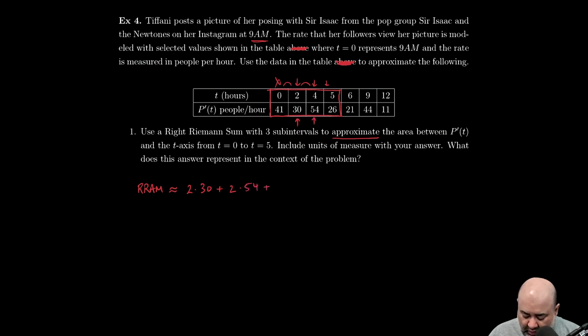Plus, now notice that these are not all equal widths. This width was two, this width was two, and this width is only one, so you need to make sure that you're accounting for these, especially in table problems. Do not assume that all the widths are the same. And then this turns out to be 60, 108, 168, 26, 194.